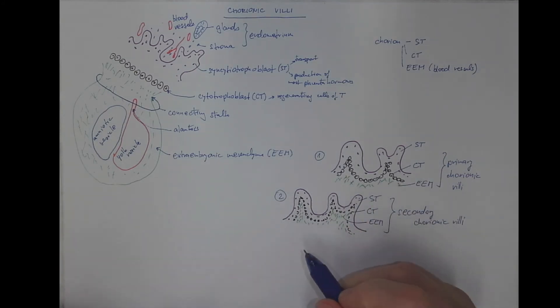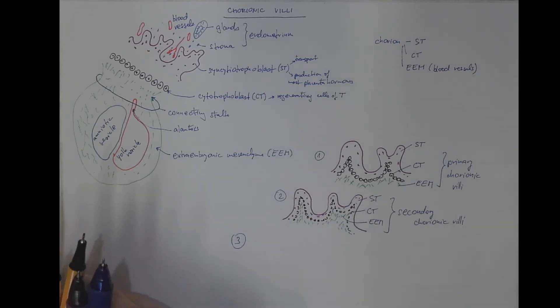However, there is no way to establish any circulation because the extra embryonic mesenchyma is lacking any blood vessels. The last stage contains blood vessels.